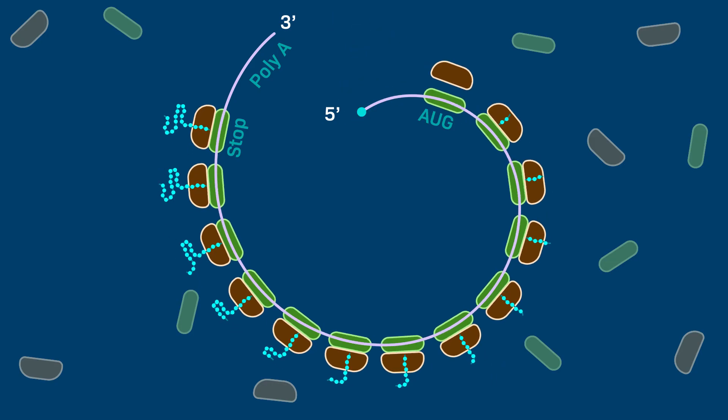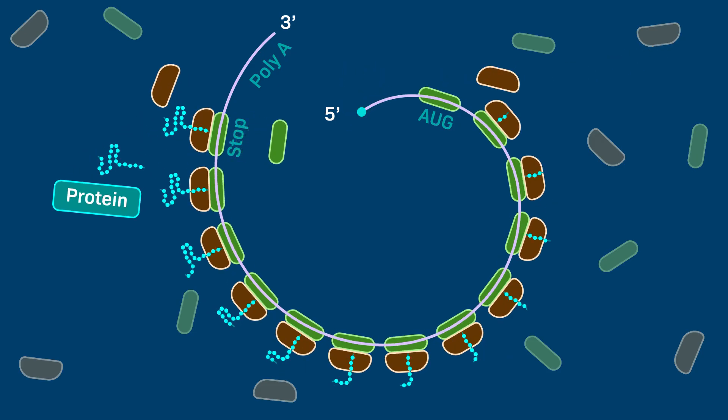When a ribosome reaches a stop codon, the ribosome and the new protein dissociate from each other and from the mRNA.